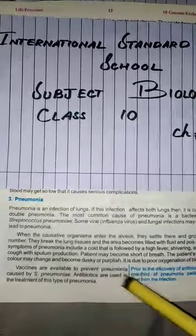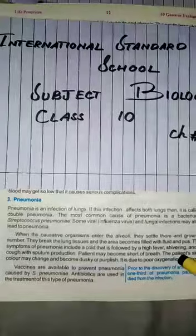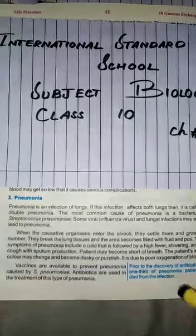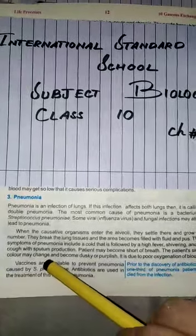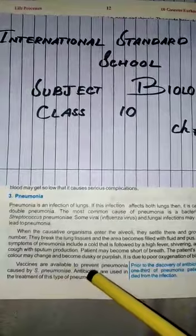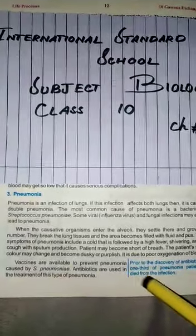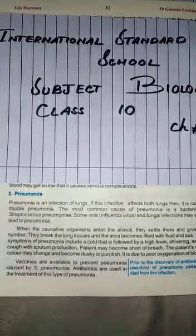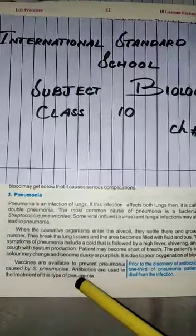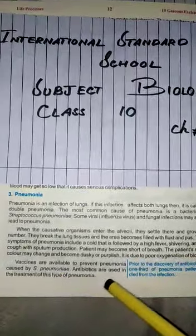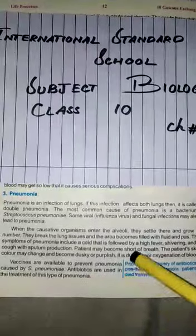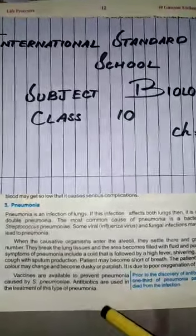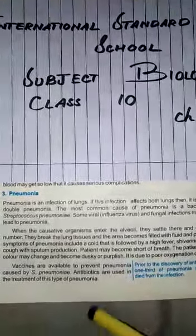The symptoms are cold, high fever, shivering — the whole body starts shivering — and a cough with sputum production. The patient may become short of breath, and the patient's skin color may change and become dusky and purplish. The preventive treatment used is antibiotics.